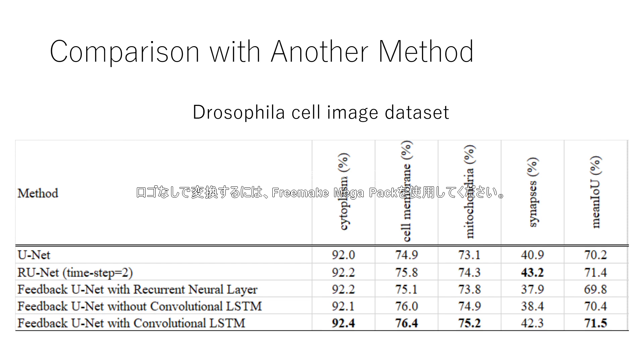This table shows the comparison result with another method on the Drosophila cell image dataset. R-UNet is a segmentation model composed of U-Net and recurrent neural network. R-UNet replaces each convolutional layer with recurrent convolutional layer on U-Net. Feedback U-Net with recurrent convolutional layer is the model which replaces convolutional LSTM in our approach with recurrent convolutional layer. Our methods achieve the best accuracy on Drosophila cell image dataset.